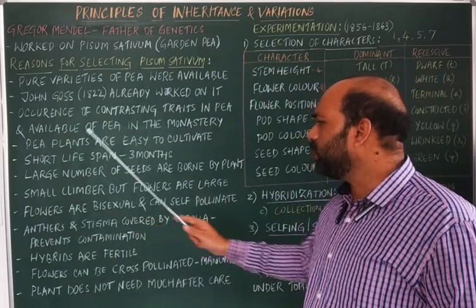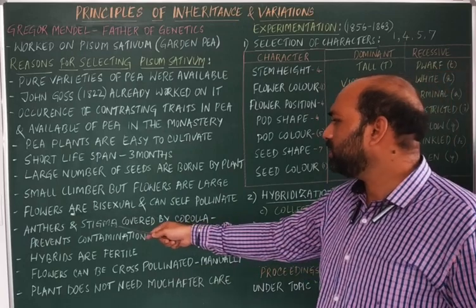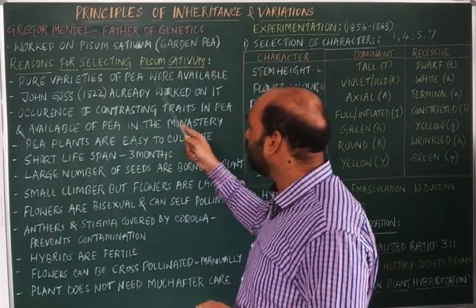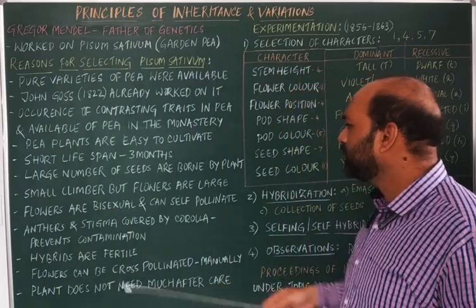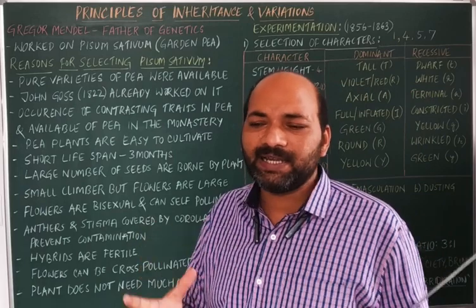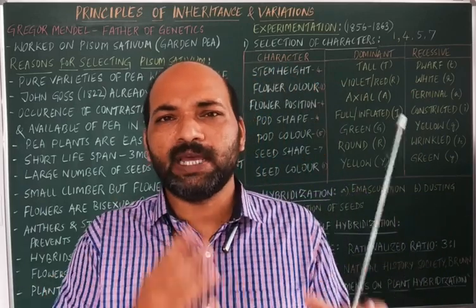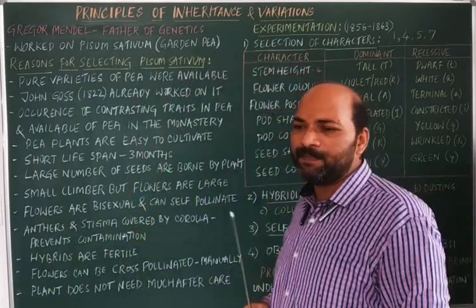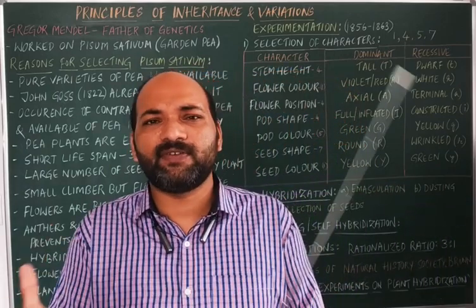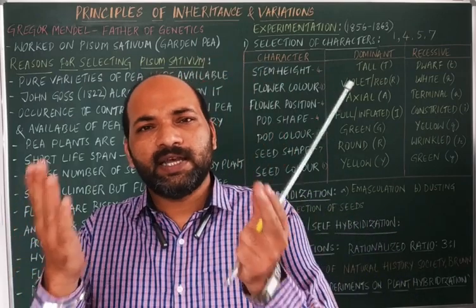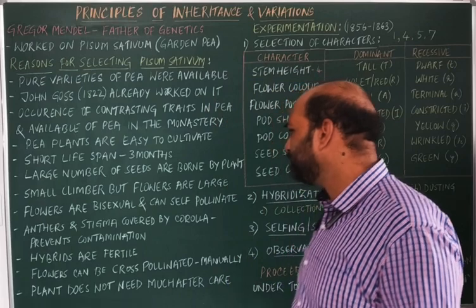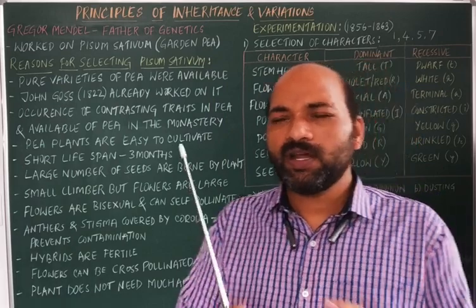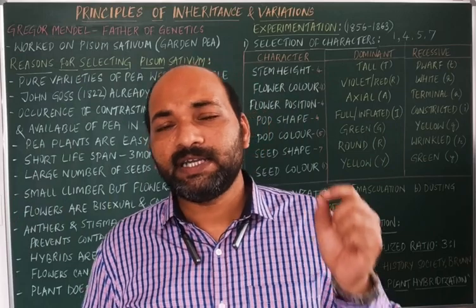Next, the pea plant is a small climber, but the flowers are large in size. The garden pea, Pisum sativum, has bisexual flowers, meaning they contain both androecium and gynoecium — male as well as female reproductive organs are present in a single flower. Generally, this flower exhibits self-pollination because both male and female reproductive organs are present. Additionally, anthers and stigma are covered by the corolla. When the corolla is large enough and covers both anther and stigma, it prevents contamination.